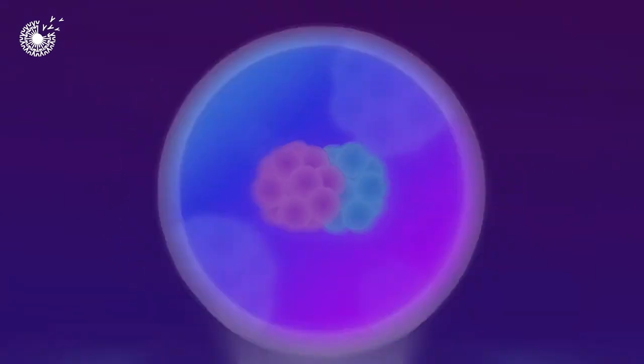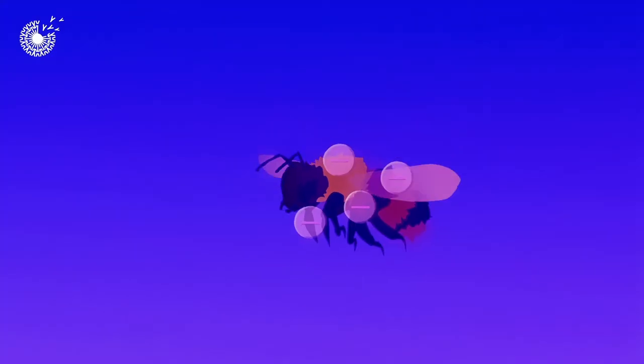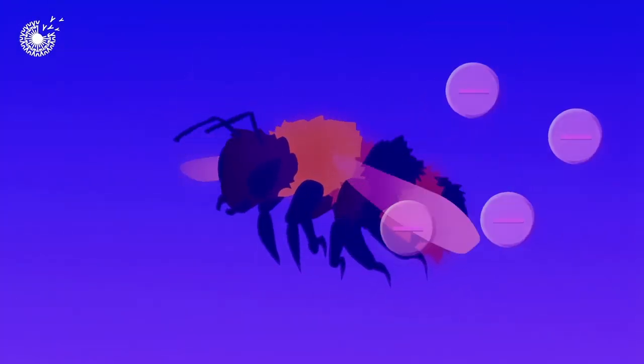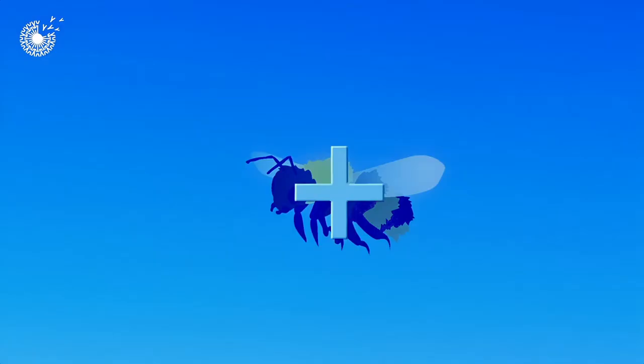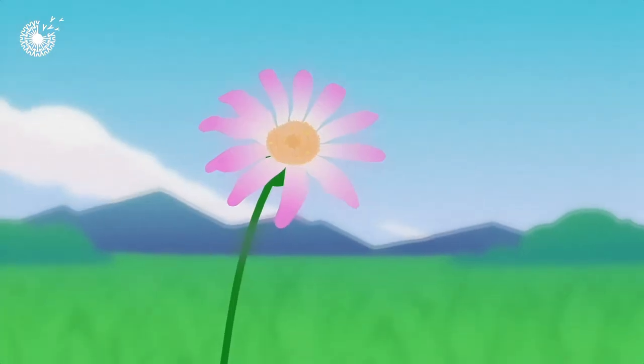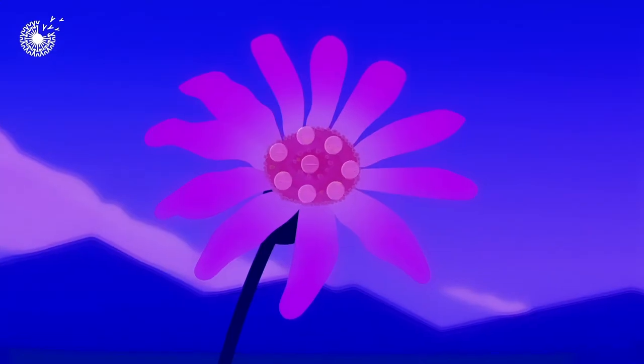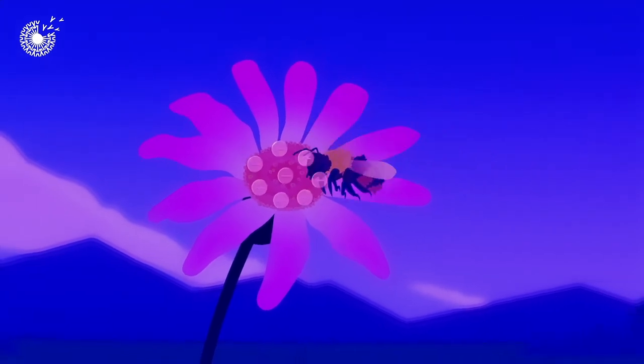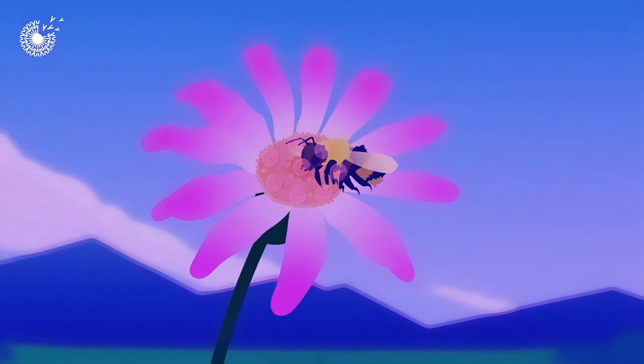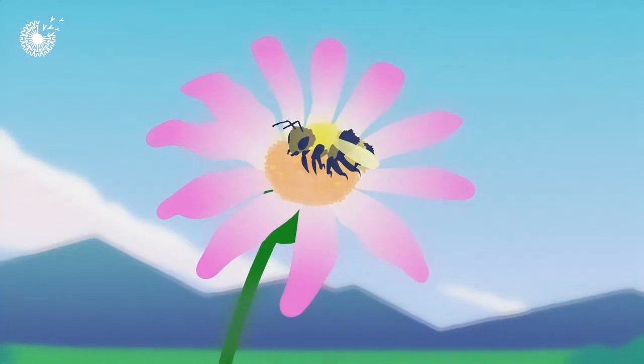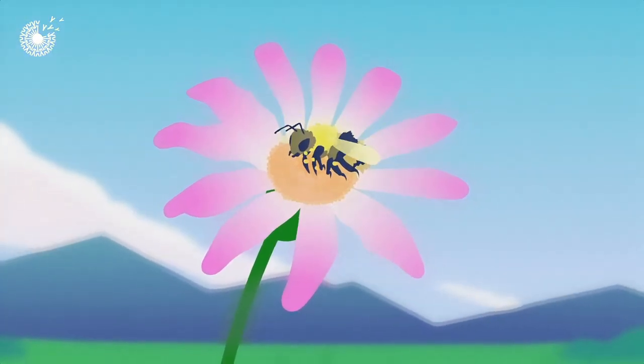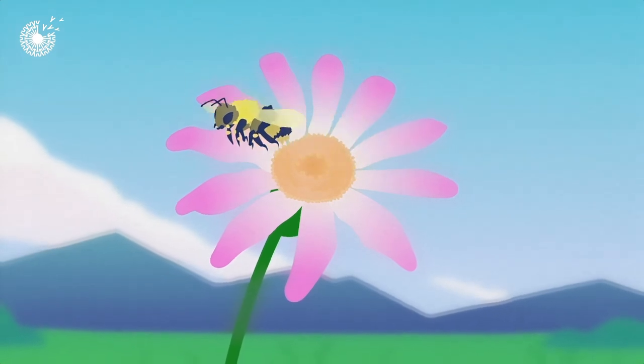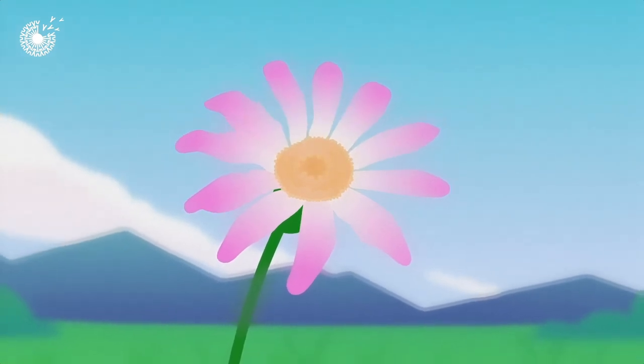For example, as a bumblebee flies through the air, it is stripped of negatively charged electrons, and the bee becomes positively charged. Flowers, on the other hand, are negatively charged. As a positively charged bumblebee approaches a negatively charged flower, the force of attraction causes the pollen to leap from the flower and stick to the bumblebee's hair. This makes a pretty low energy way for the bumblebee to collect pollen.